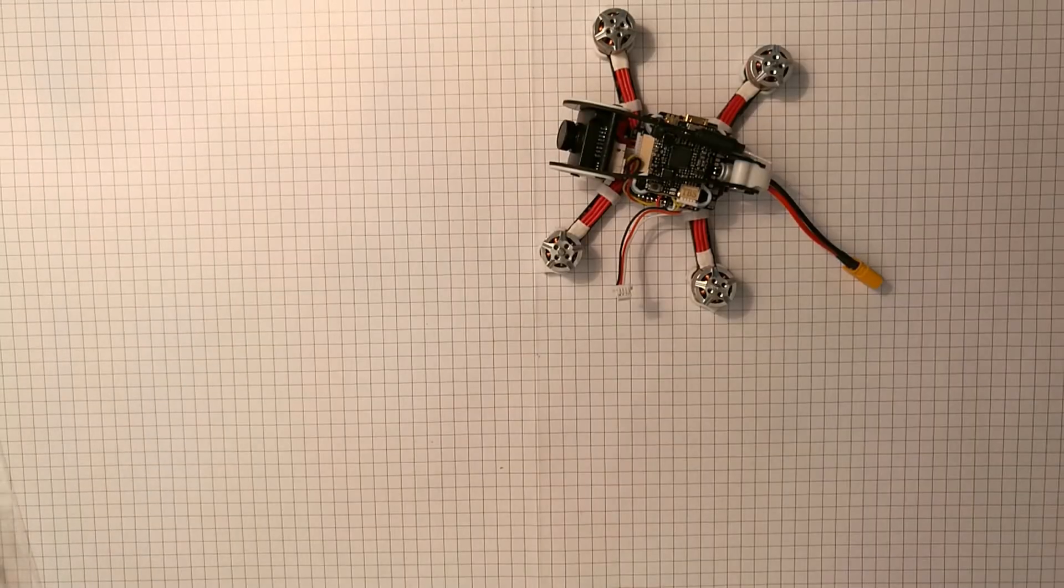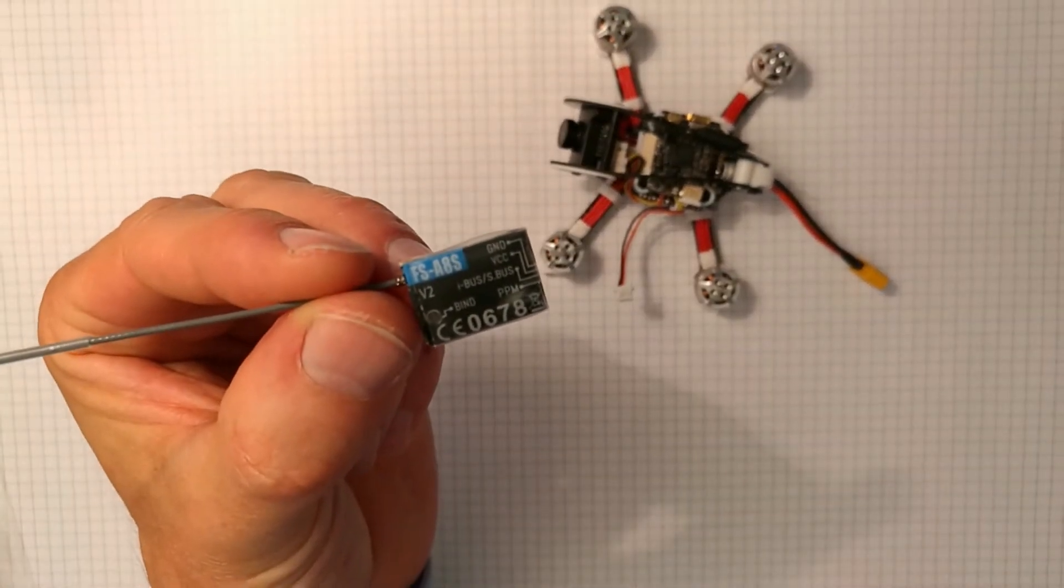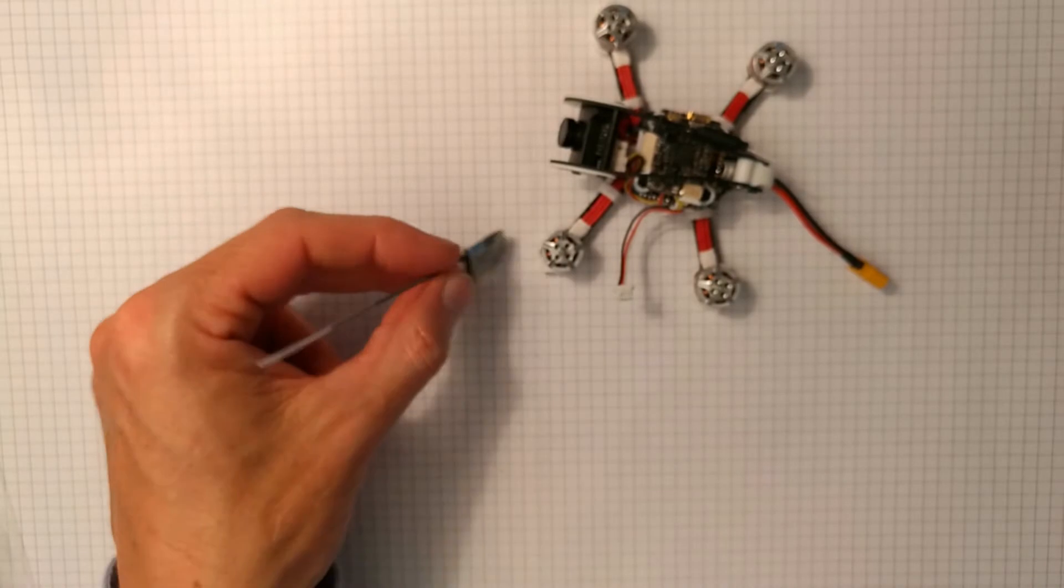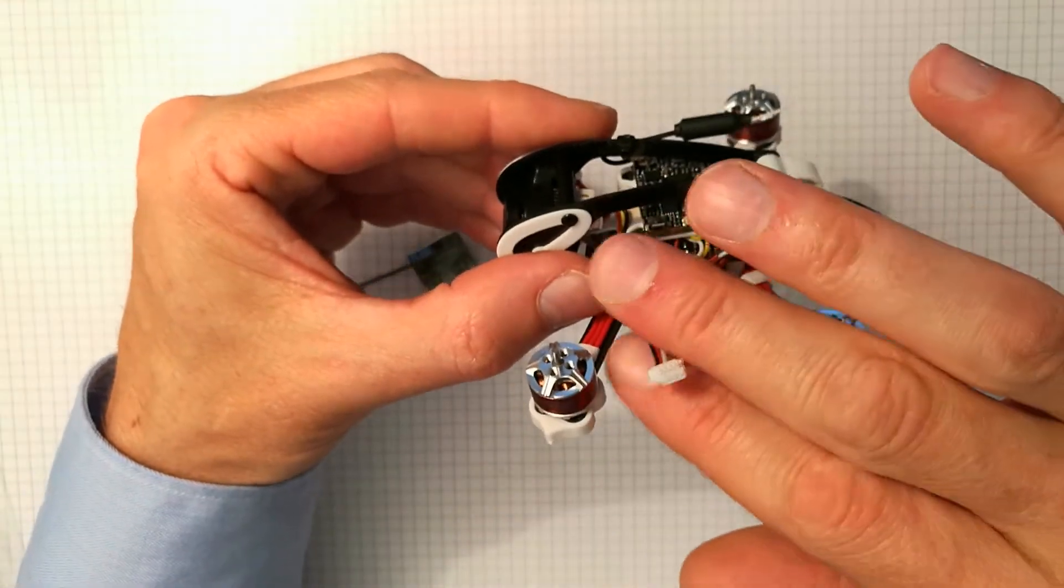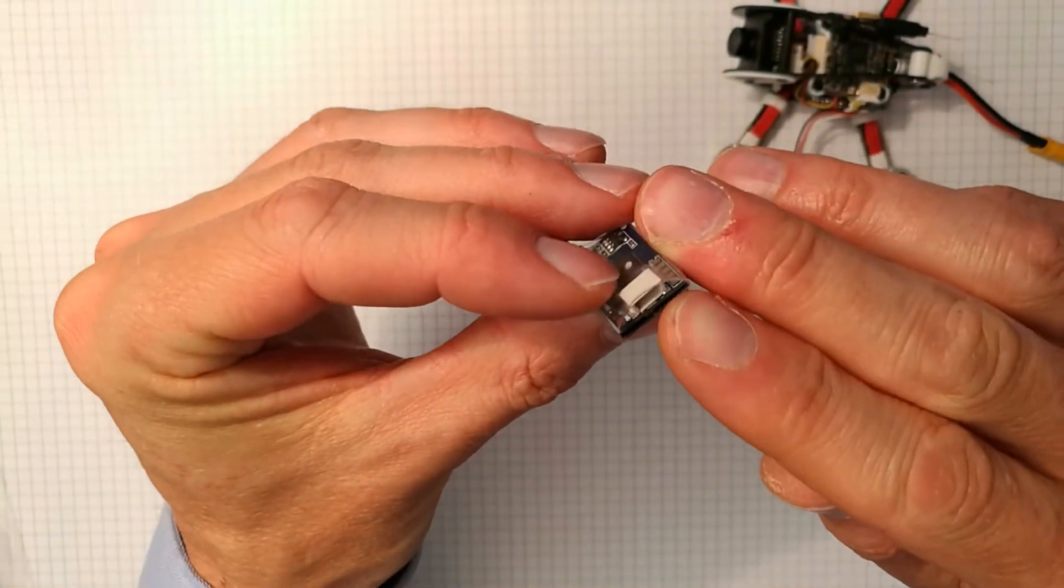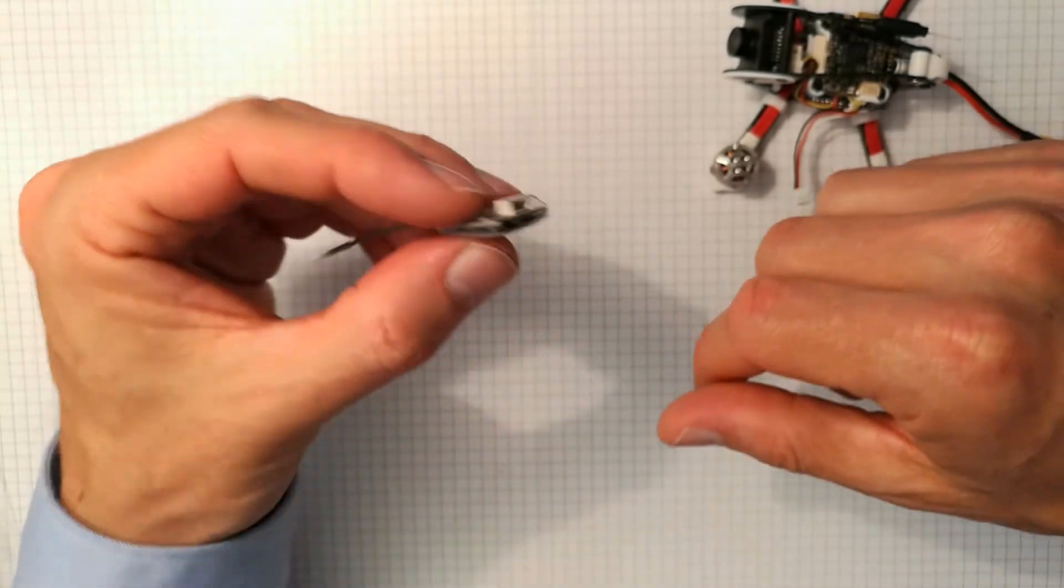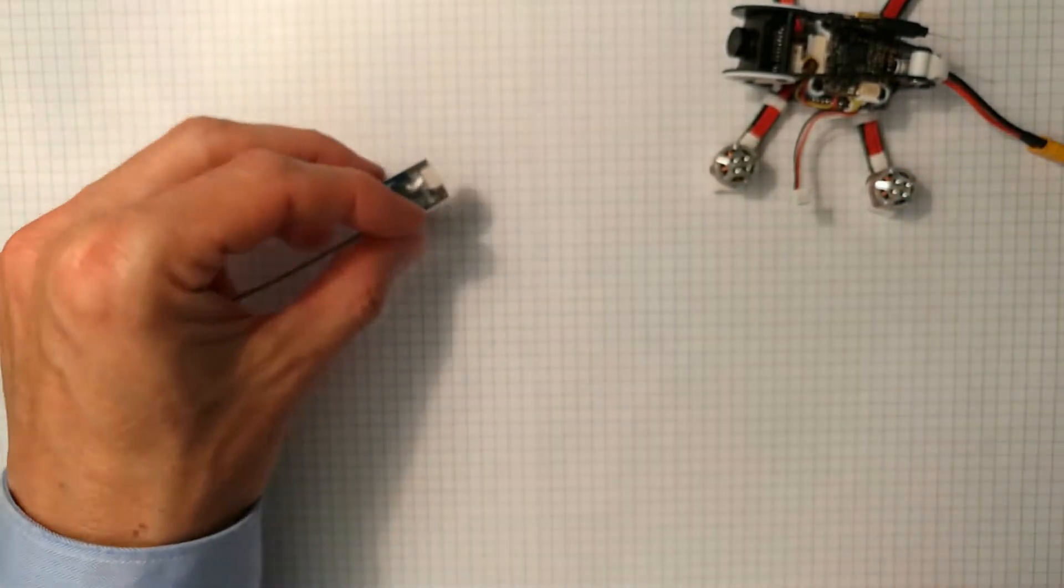Now I'm going to install this FlySky A8S6 micro receiver. And luckily this little connector here perfectly fits into the receiver socket. So besides from re-soldering the signal wire to UART 6 on the flight controller, this is a very convenient solution.